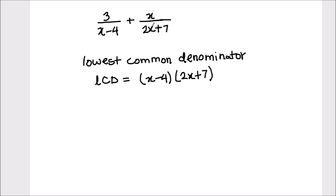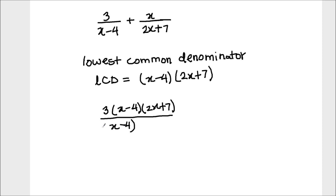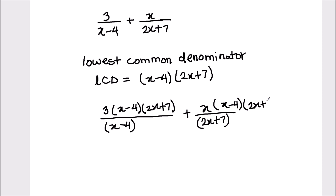Now we are going to multiply both expressions with the common denominator. So we have 3 times x minus 4 times 2x plus 7, divided by x minus 4, plus x times x minus 4 times 2x plus 7, divided by 2x plus 7.